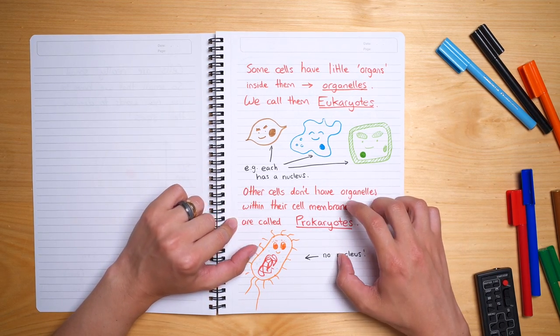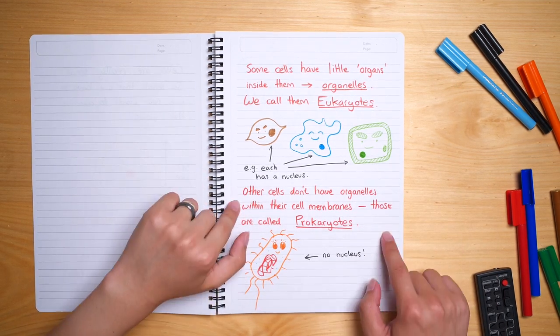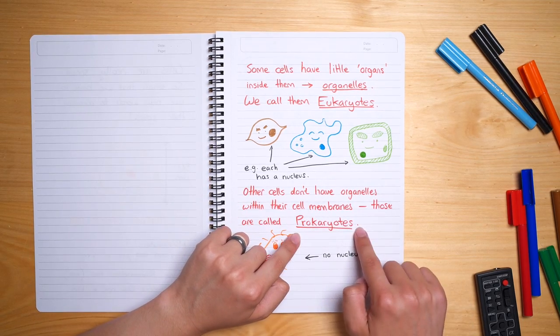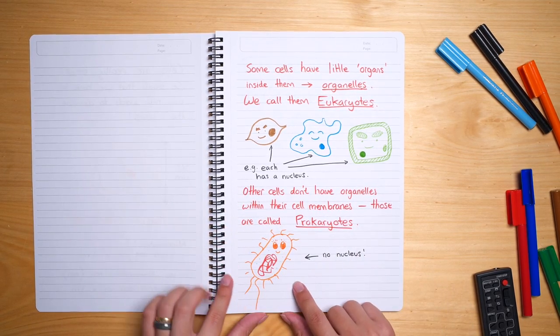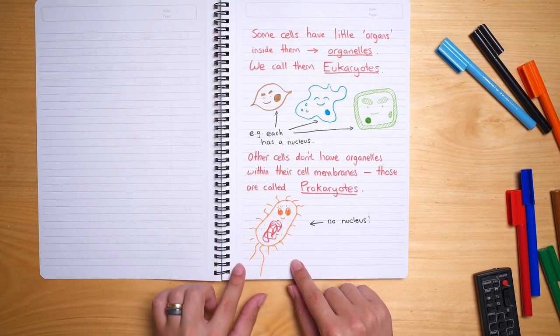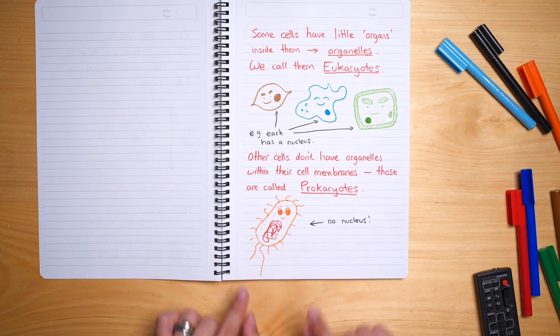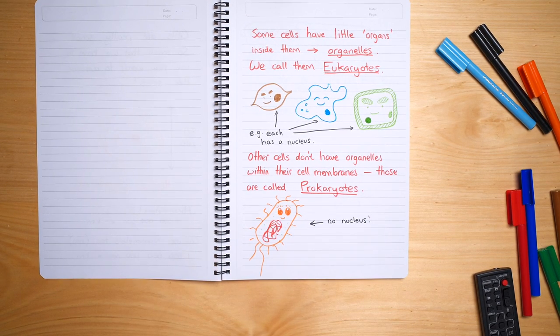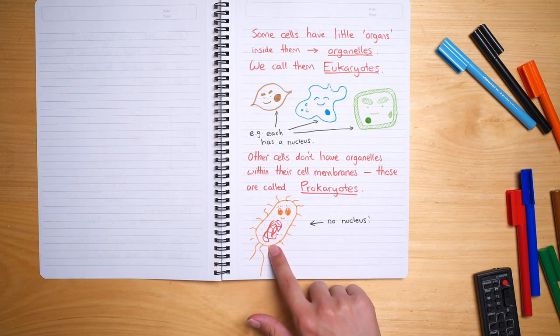If you don't have a nucleus and some of the other important organelles, we call them prokaryotes or prokaryotic cells. The only one I could sort of find on short notice was bacteria. Seems to be a very popular example of a prokaryotic cell which doesn't contain a nucleus. It has other things inside, but the main feature that's missing is the nucleus.